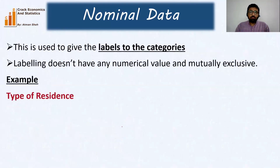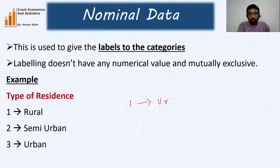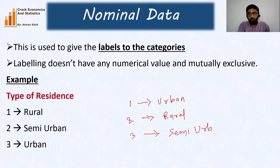Let's take another example. Suppose we have the variable type of residence. We can assign one to rural, two to semi-urban, and three to urban. This variable has three categories: rural, semi-urban, and urban. Again, we can reassign the codes in a different order — for example, one to urban, two to rural, and three to semi-urban — because order doesn't matter and the points do not have any numerical importance.